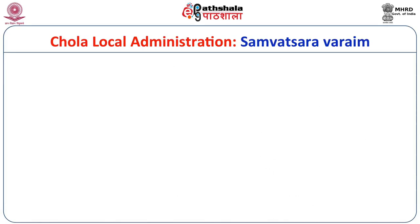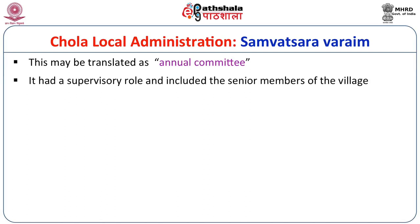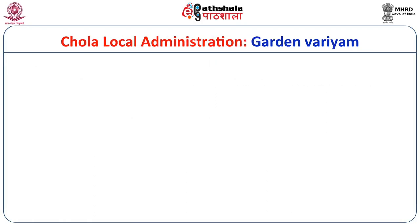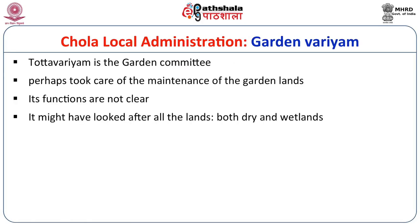Several committees existed for managing the affairs of the Brahmin villages. We have reference to the Samotsara Varyam, meaning the annual committee, which had a supervisory role, included senior members, managed accountants, and supervised the work of other committees. We have another committee called the Thotha Varyam, or garden committee. We do not know if it managed only dry land or also wetlands. The term Thotham translates to garden in Tamil, possibly referring to Punjai or dry land, though it may also have covered Nanjai or wet land.